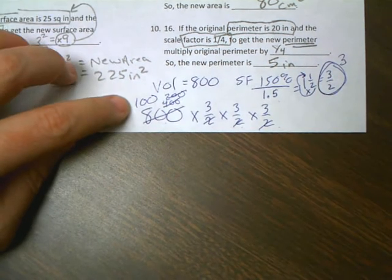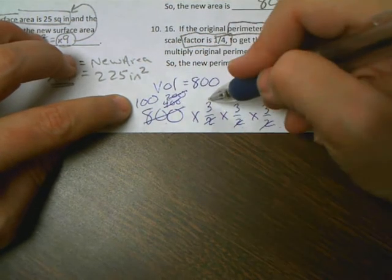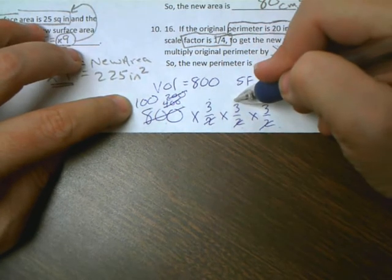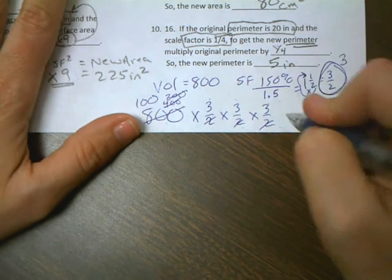That makes it, and you can do that all in your brain, you don't even have to write it down. 100 times 3 is 300, times 3 is 900, times 3 is 2700.